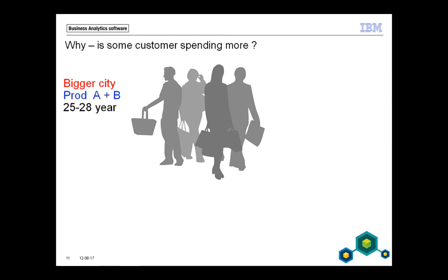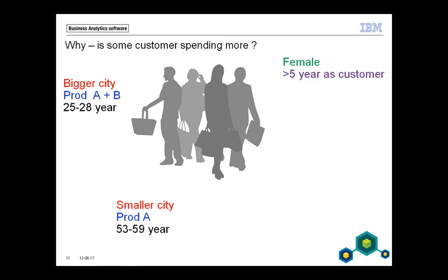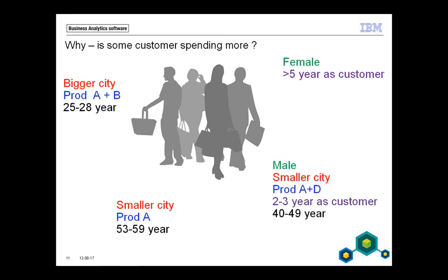Here's an example of a group that the computer found: people living in bigger cities using products A and B, aged 25 to 28 years old. The computer also found another group — people living in smaller cities using only product A, and a bit older. Then females who have been customers more than five years are also a group that spends more. And there's a more complex group: males living in smaller cities, products A and D, customers for two to three years, aged 40 to 49. Why not use this information on other new prospect databases, like UNICEF is doing?